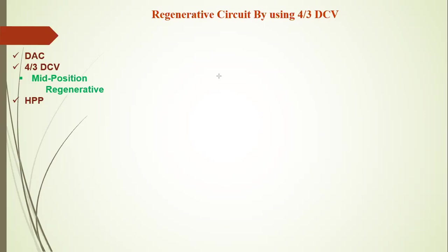For a regenerative circuit using a 4/3 direction control valve, the required components are: first, a hydraulic power pack (HPP), which contains a hydraulic tank, a hydraulic pump and motor set, and one pressure relief valve. Second, one 4/3 direction control valve — compulsorily, the mid position of this direction control valve must be the regenerative type.